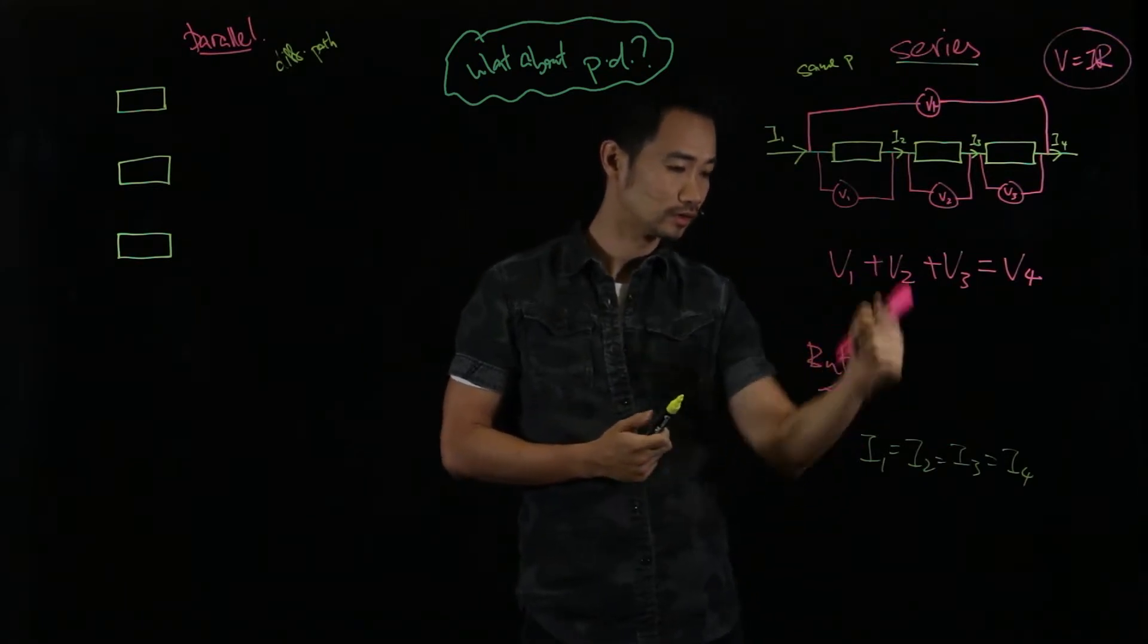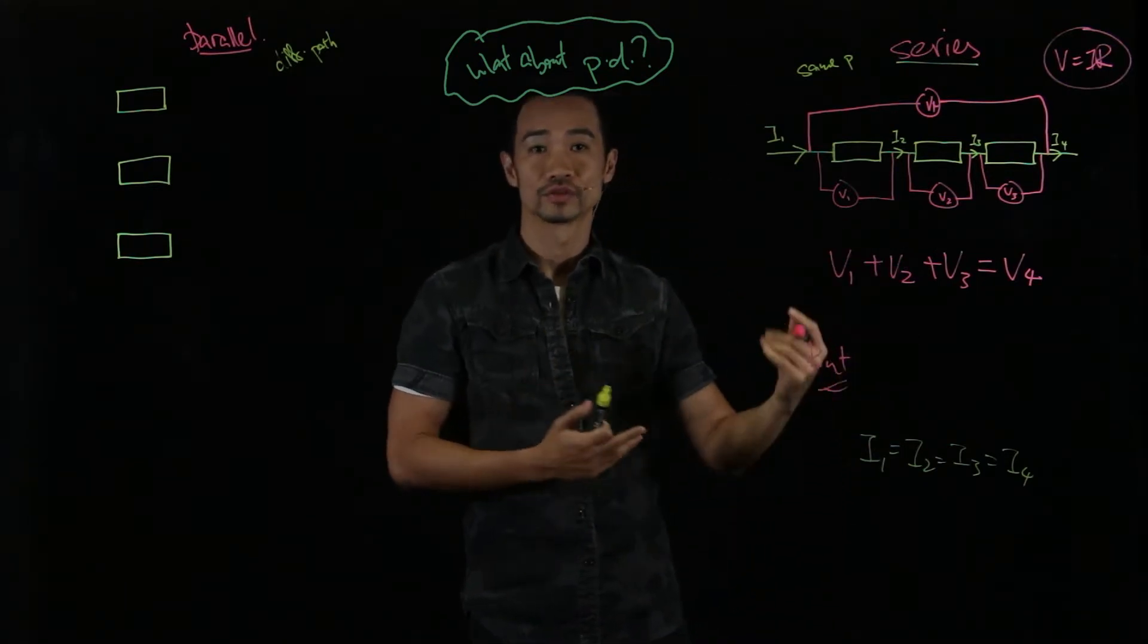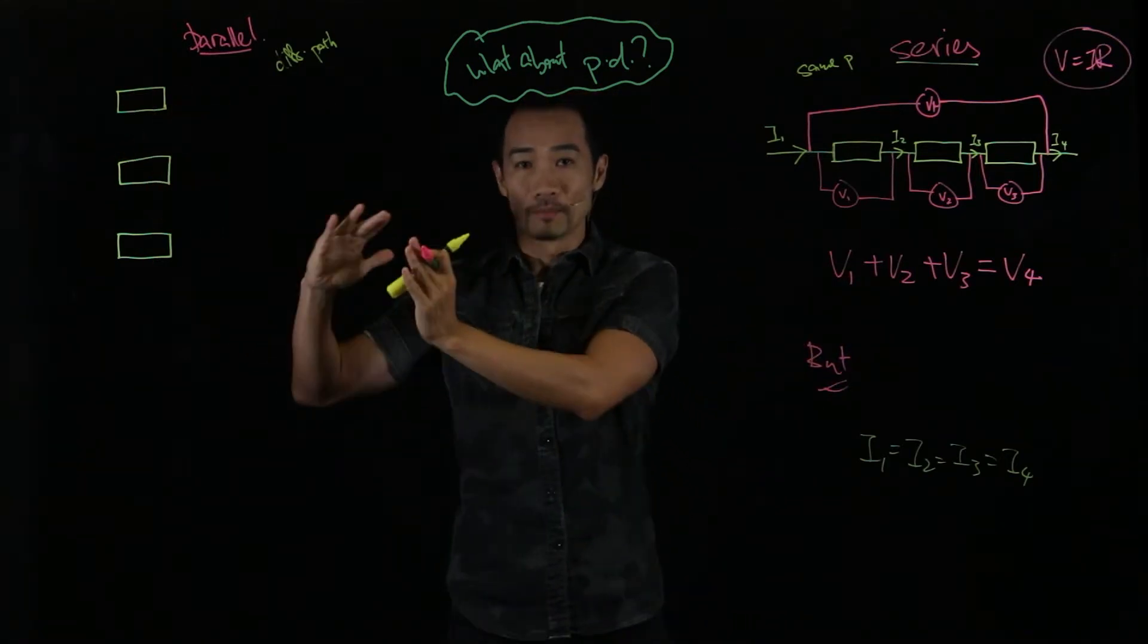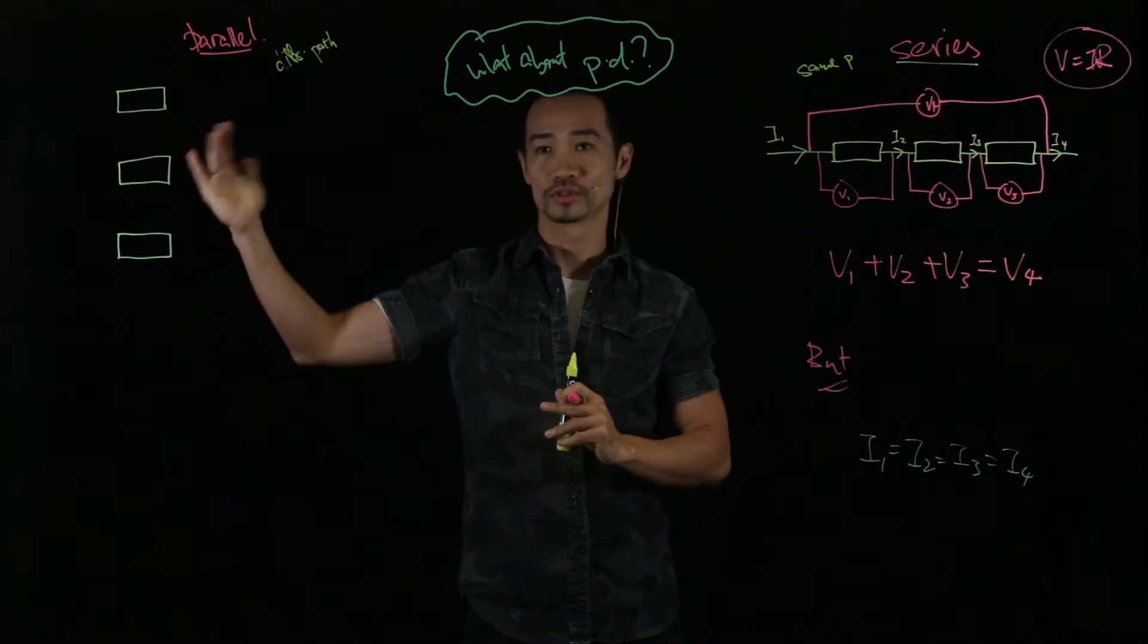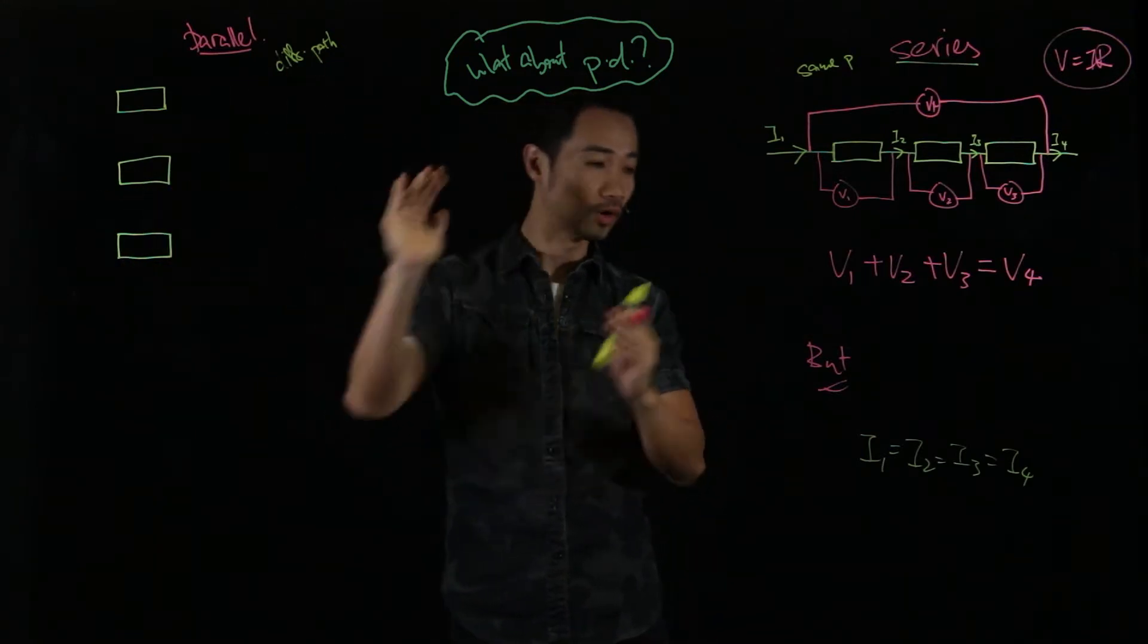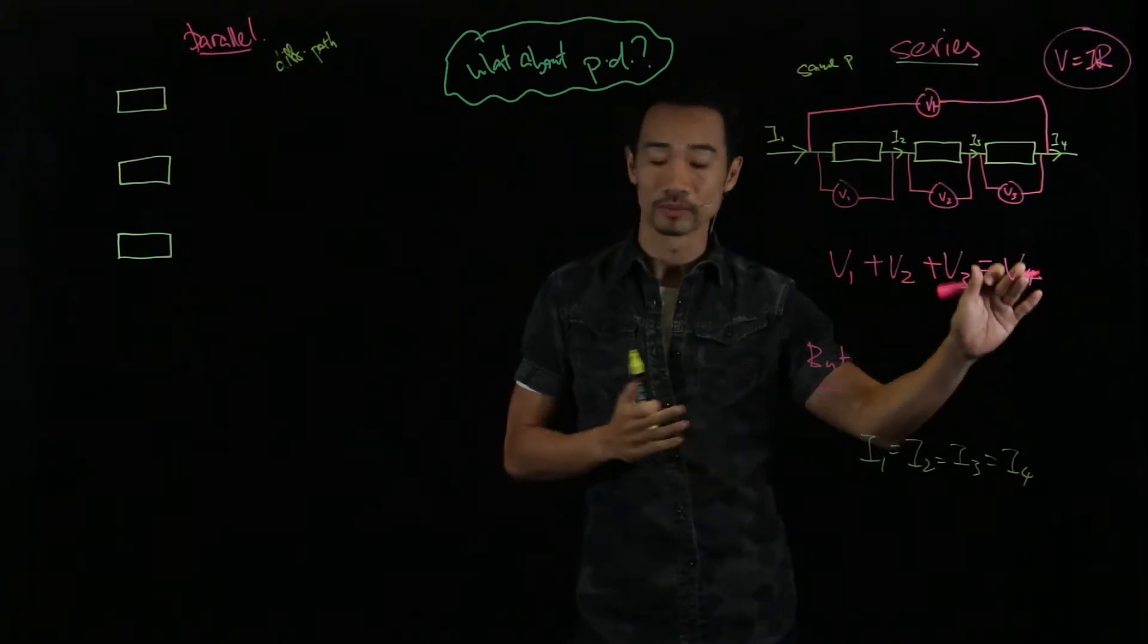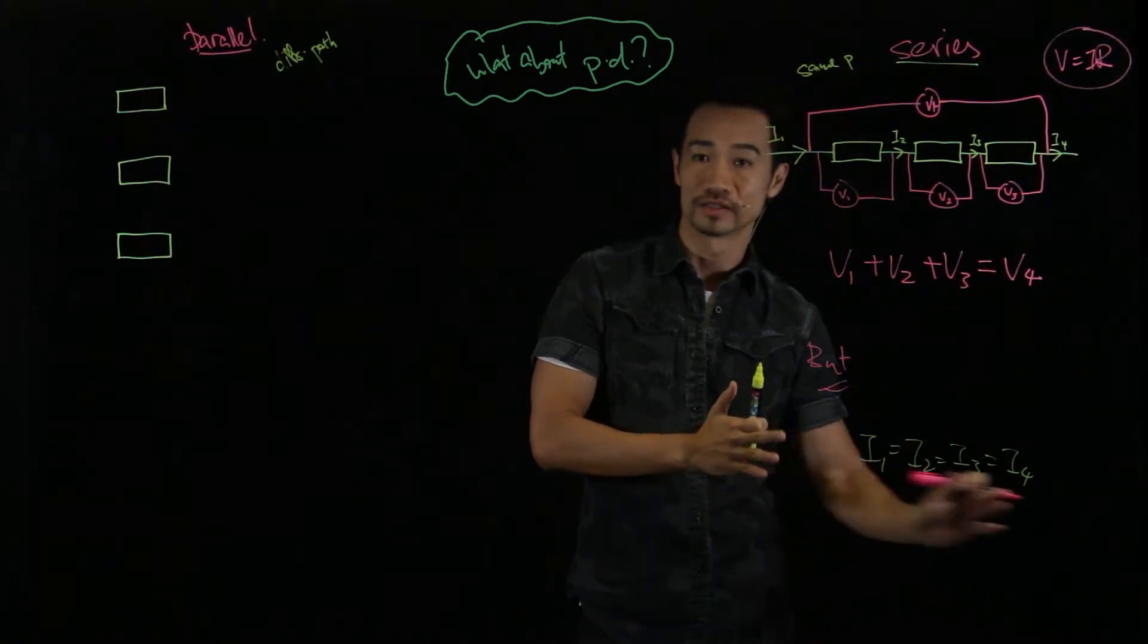So you can see over here the opposite. The last time when we learned about current in a parallel circuit, they split up, they combine. We say that I1 equals to I2 plus I3 plus I4. But over here you see V1 plus V2 plus V3 equals to V4. But yet the current is all the same.